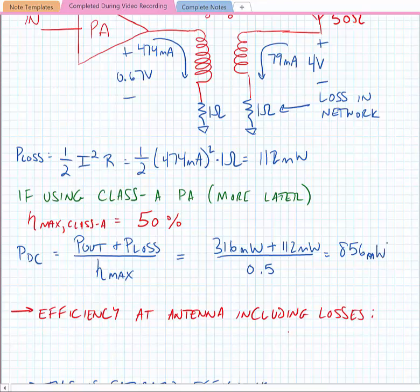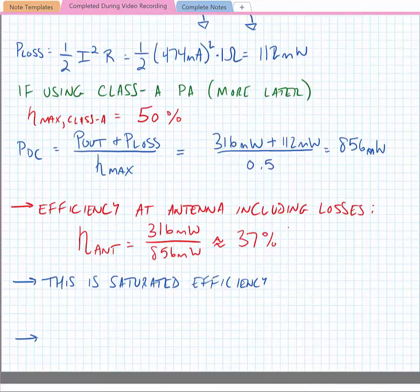So if we were to recalculate the total efficiency at the antenna including these losses, we would just take the ratio of the power delivered to the antenna, 316 milliwatts, divided by the total DC power consumed, which is 856 milliwatts, and it would be an efficiency of 37 percent. It's important to note that this is the saturated efficiency, and it decreases substantially as the output power is decreased.